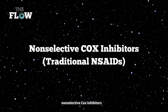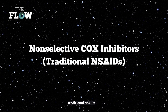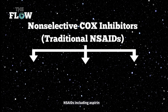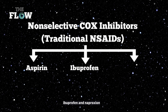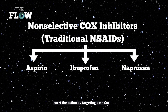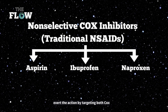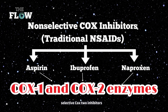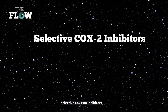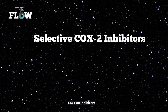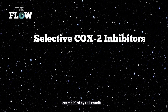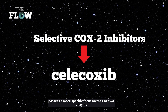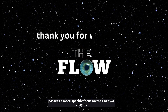Non-selective COX inhibitors — traditional NSAIDs including aspirin, ibuprofen, and naproxen — exert their action by targeting both COX-1 and COX-2 enzymes. Selective COX-2 inhibitors, exemplified by celecoxib, possess a more specific focus on the COX-2 enzyme.